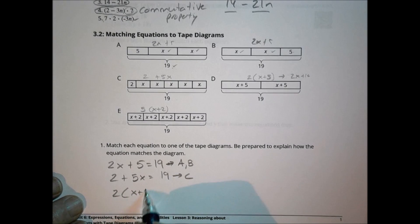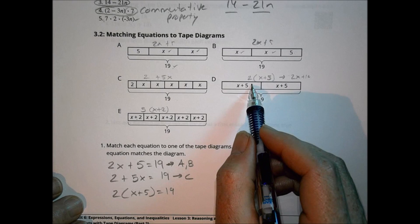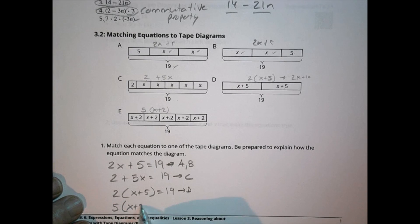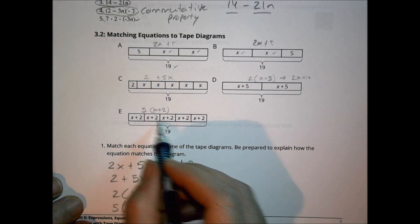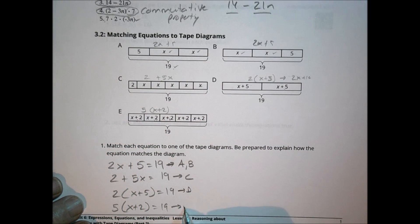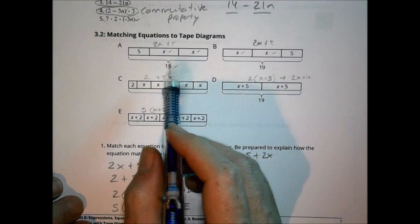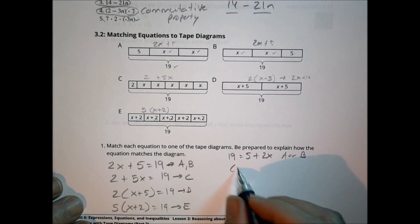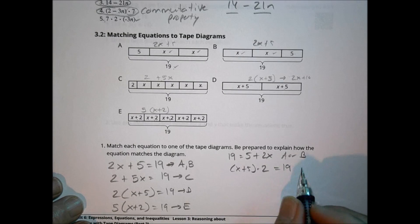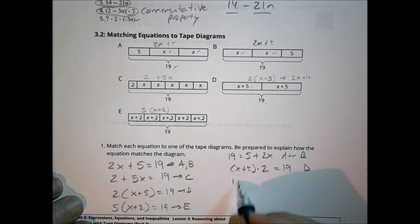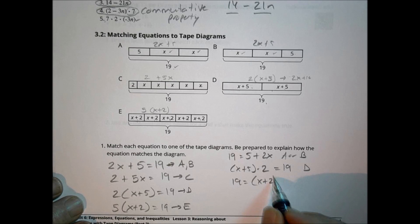The equation 2 times the quantity x plus 5 equals 19 matches choice D, where we have 2 groups of x plus 5. Then 5 times the quantity x plus 2 equals 19 — where do I have x plus 2 five times? That's choice E: x plus 2 happening 5 different times. The equation 19 equals 5 plus 2x also matches A or B.